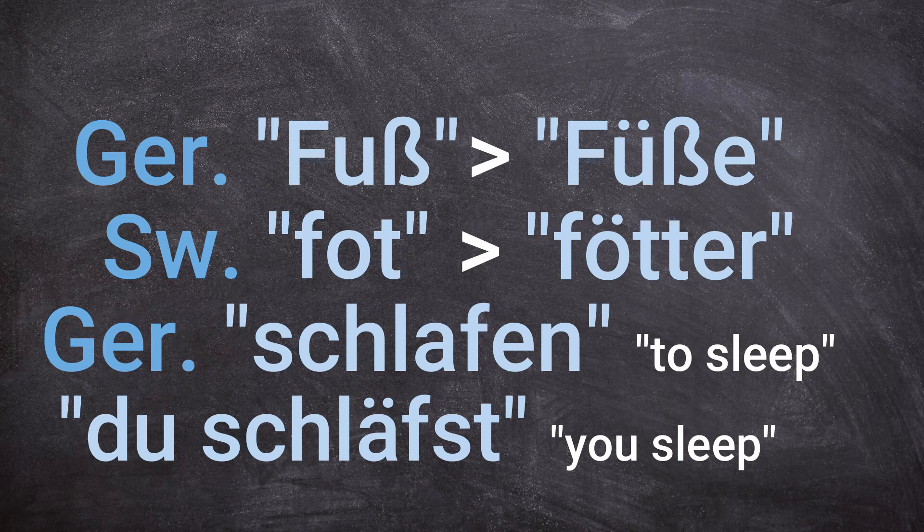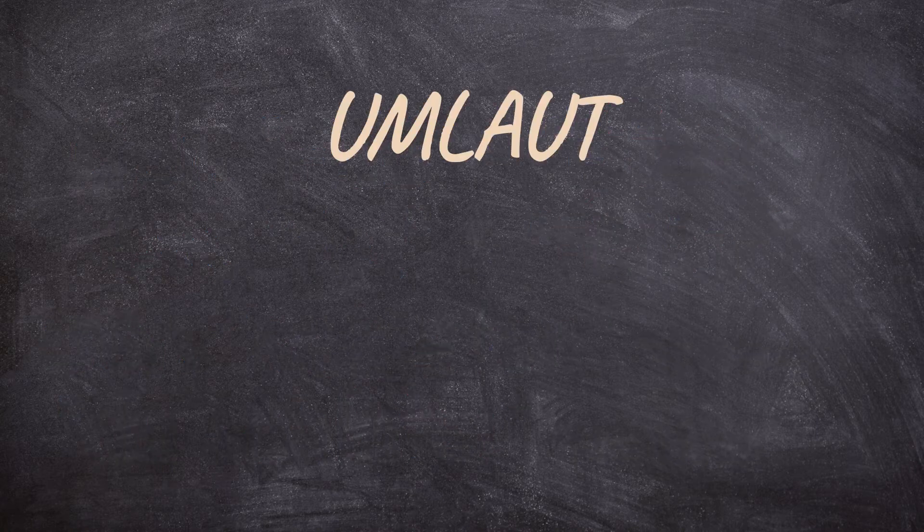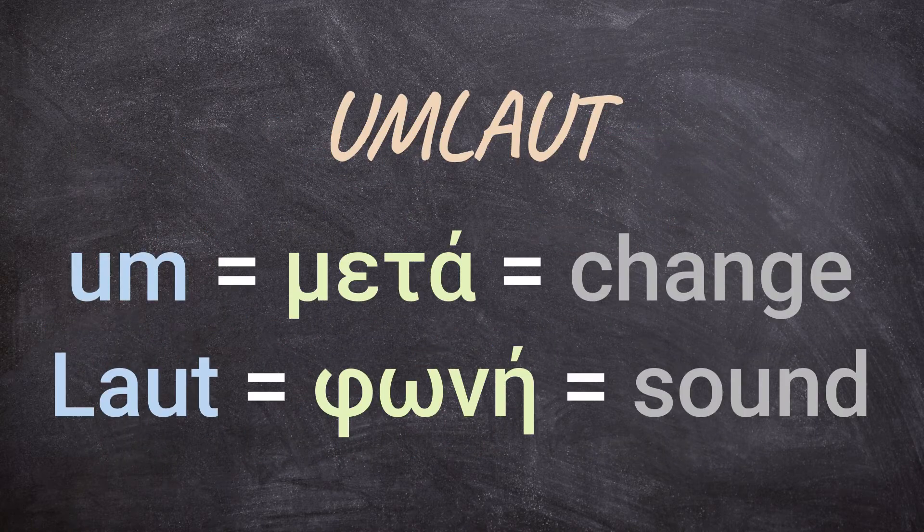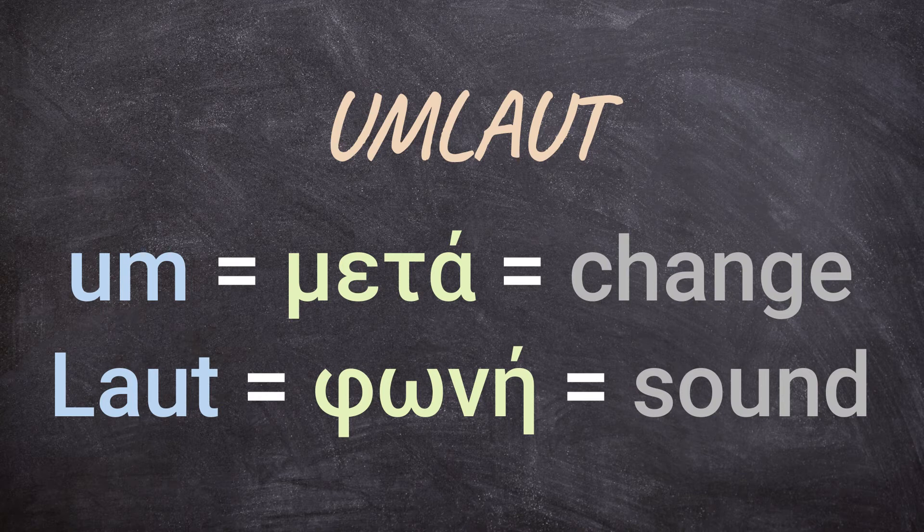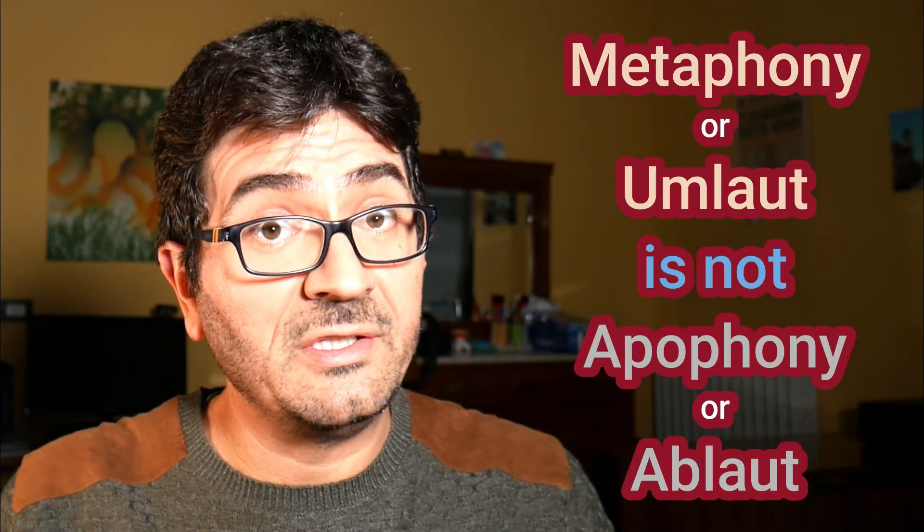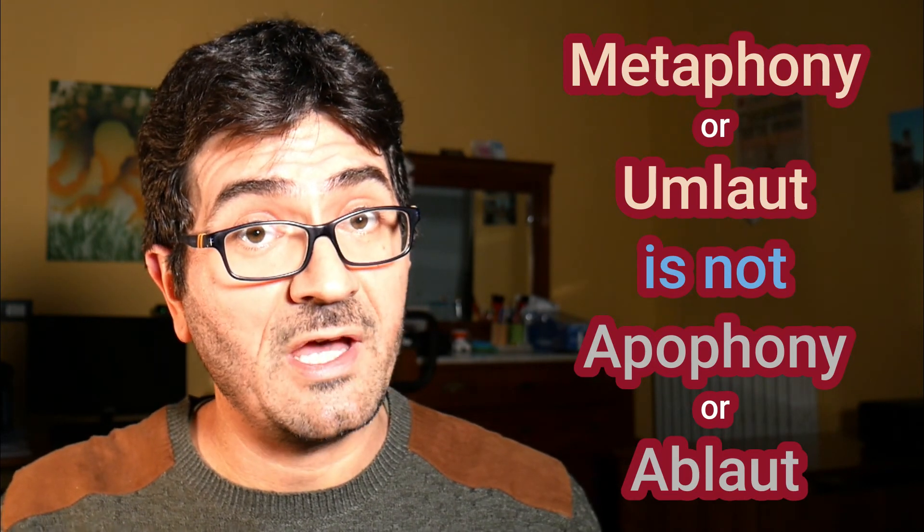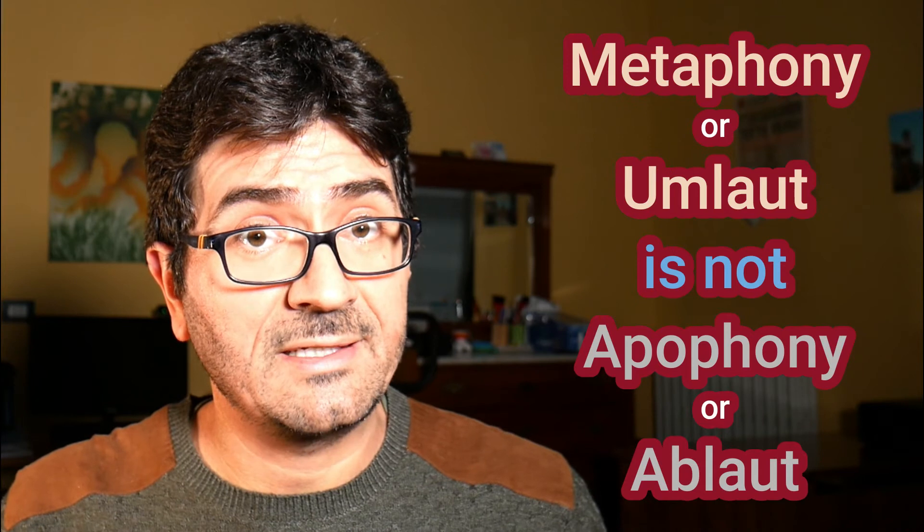And do you know what Germans call those two dots on the top of the vowel? Umlaut, which means exactly the same as metaphony, that is, sound change. Metaphony, or umlaut, is not to be confused with epophony or haplaut, which is the use of different vowels in the root syllable of verbs in order to switch from a tense to the other, like in sing, sang, sung.